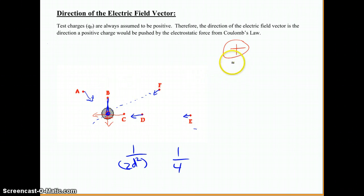Okay, so the direction is always in whatever direction a positive charge would be, so either pushed or pulled, depending on whether the charge creating the field is positive or negative. And it's going to go through the center of that charge, because it is, after all, the center-to-center distance.